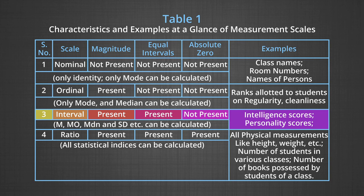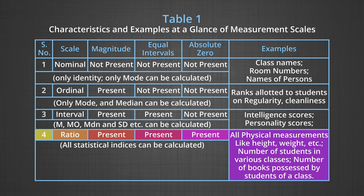The third type of scales are interval scales, which are higher than ordinal and nominal scales. These scales have magnitude and equal intervals, but the only thing missing is the absolute zero point. Examples of this type of scale include intelligence scores, personality scores, and aggressiveness scores. This type of scale allows us to calculate mean, mode, median, and standard deviation, but with certain assumptions.